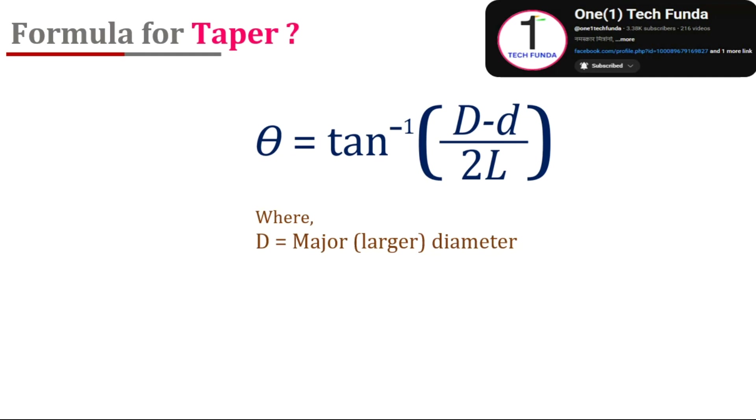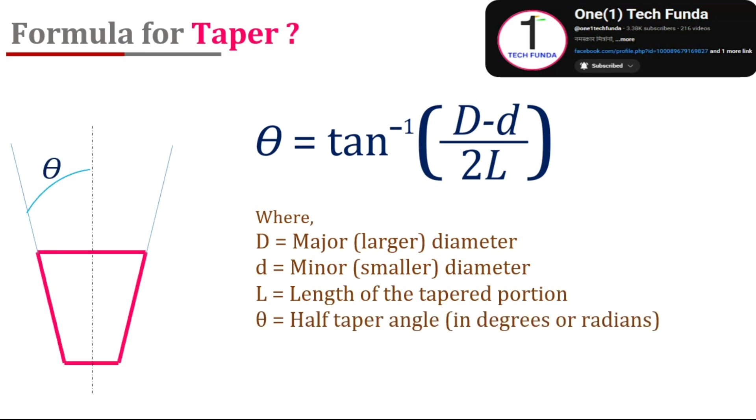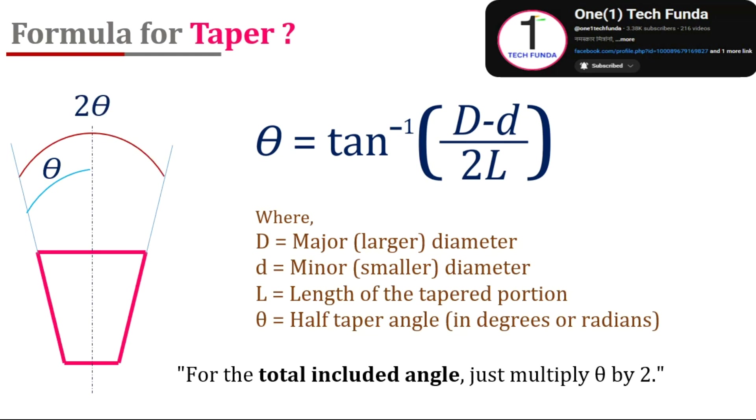Where D equals the major diameter, d equals the minor diameter, L equals the length of the tapered portion, and θ equals the half taper angle. For the total included angle, we just multiply θ by 2.